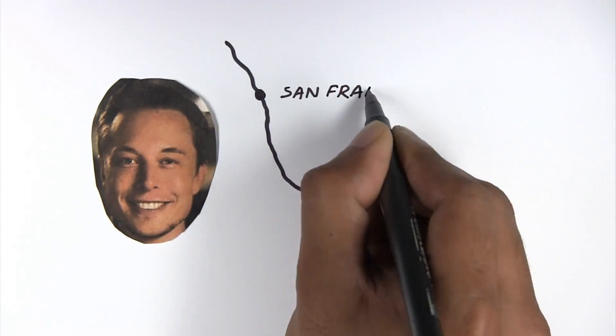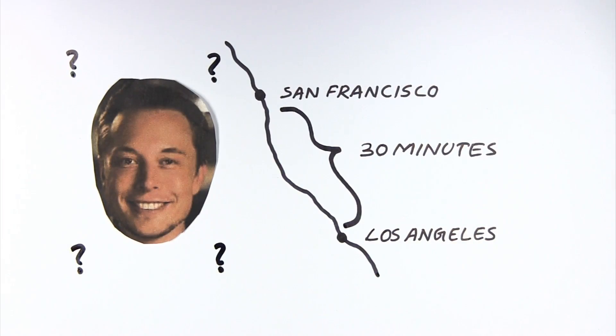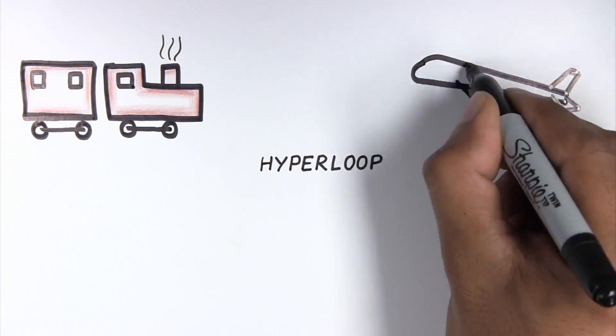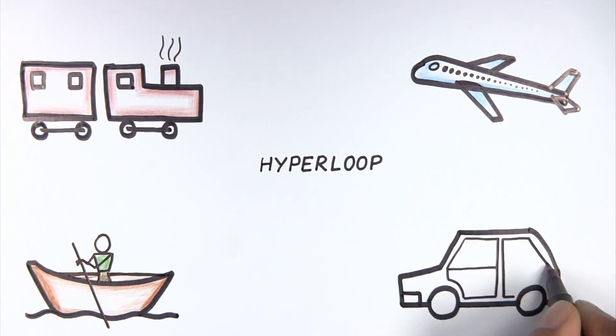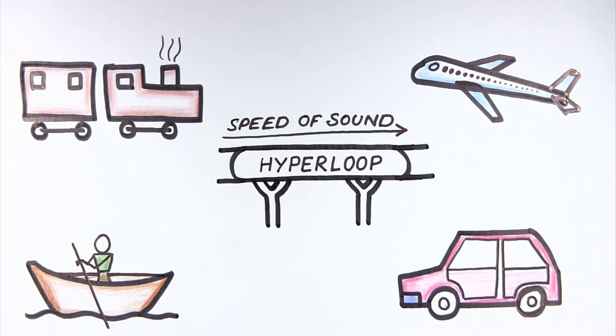If Elon Musk is to be believed, one can travel from LA to San Francisco in 30 minutes. It's an idea called Hyperloop, a new mode of transportation where people can travel at a speed close to the sound barrier.